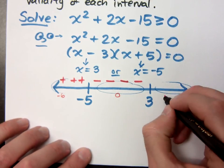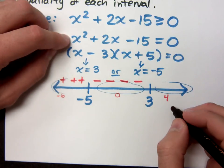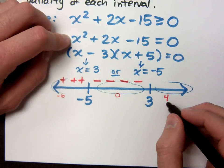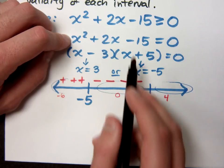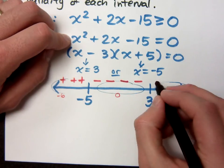And then finally over here, if I plug in 4, that's 16 plus 8 is 24, 24 minus 15 is positive 9. So everything over here is positive.